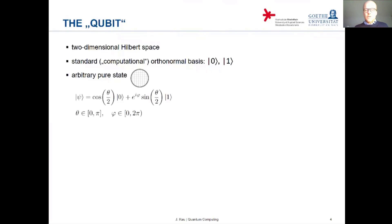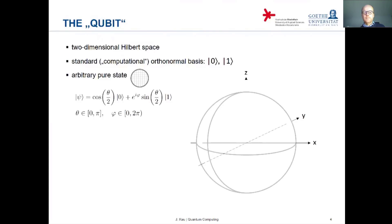This is precisely what was just shown: you can always write a pure state of a qubit in this particular form. This suggests that with two angles θ and φ, you can represent the pure state of a qubit graphically as a point on the surface of a sphere.